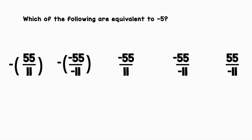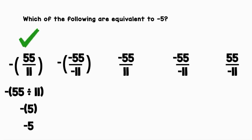Which of the following are equivalent to negative 5? Let's start at the left. We've got negative (55 over 11). We can rewrite that as negative (55 divided by 11). Inside the parentheses, 55 divided by 11 is positive 5. We bring down the negative, and our answer is negative 5. So we can give this a check.